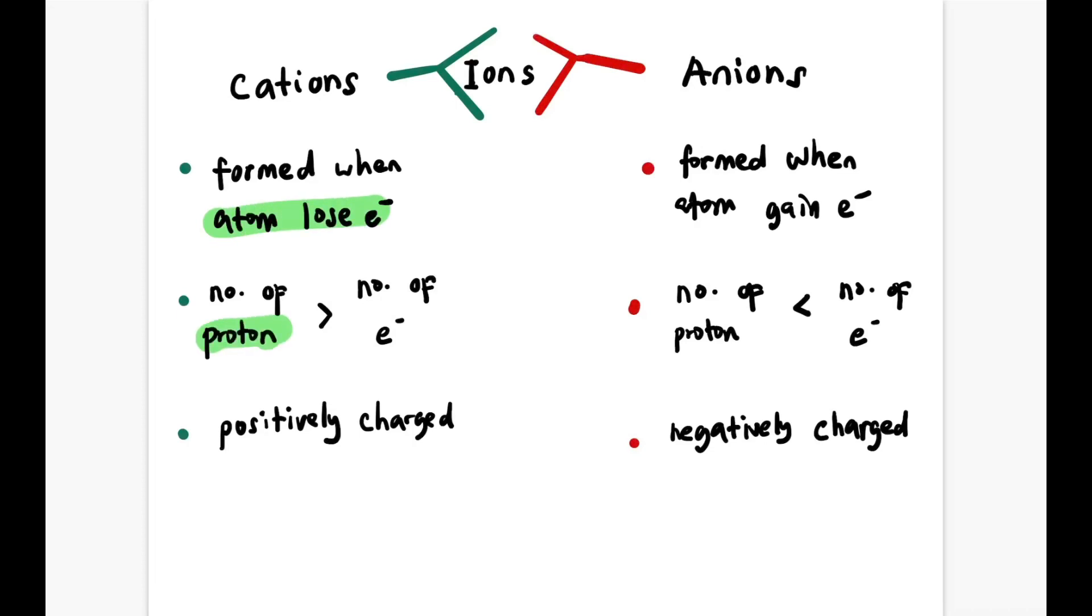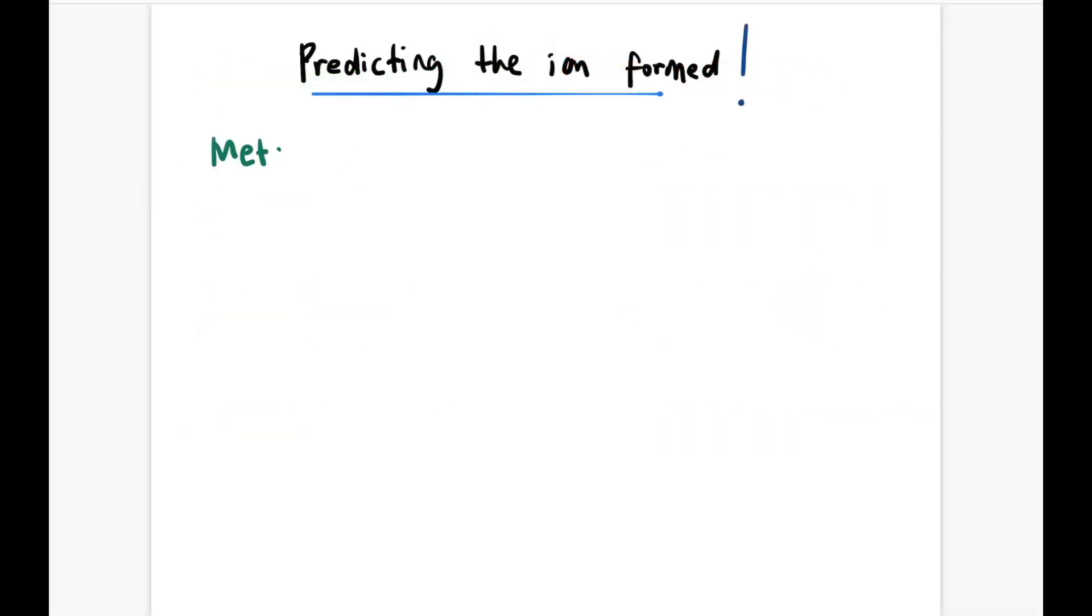Ions can be categorized into two: cations and anions. Cations form when atoms lose electrons, hence the number of protons is more than the number of electrons and they are positively charged. Meanwhile, anions are formed when atoms gain electrons, hence the number of protons is less than the number of electrons and they are negatively charged.